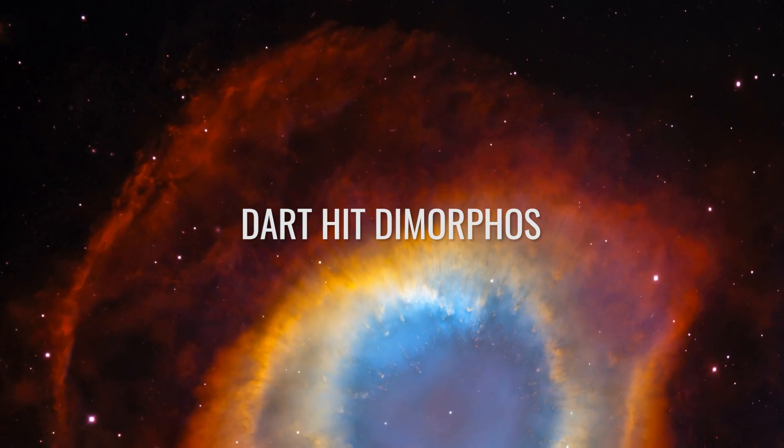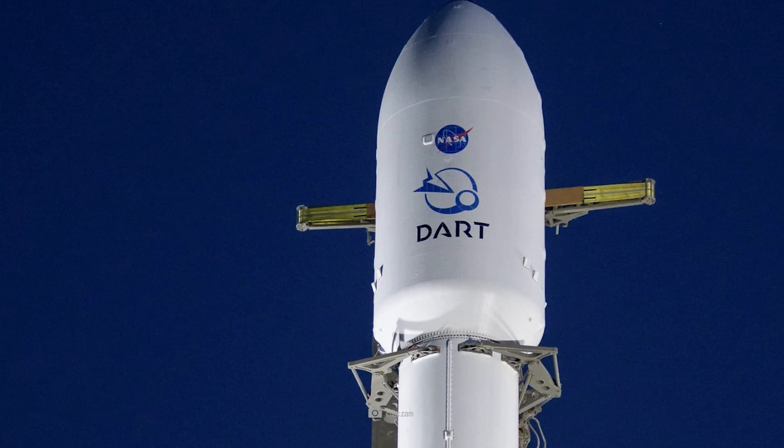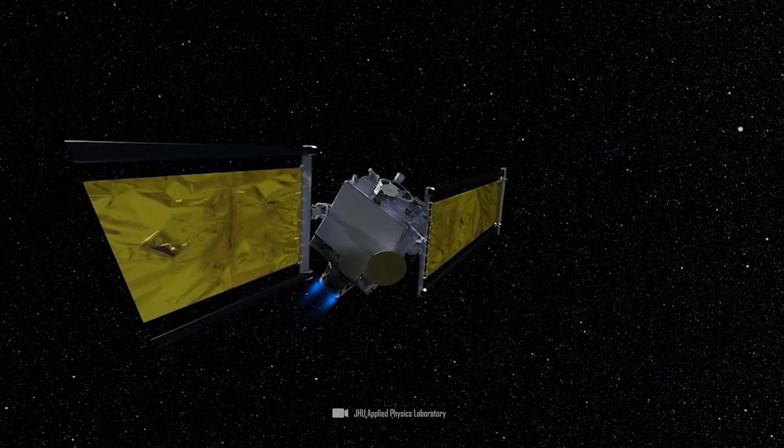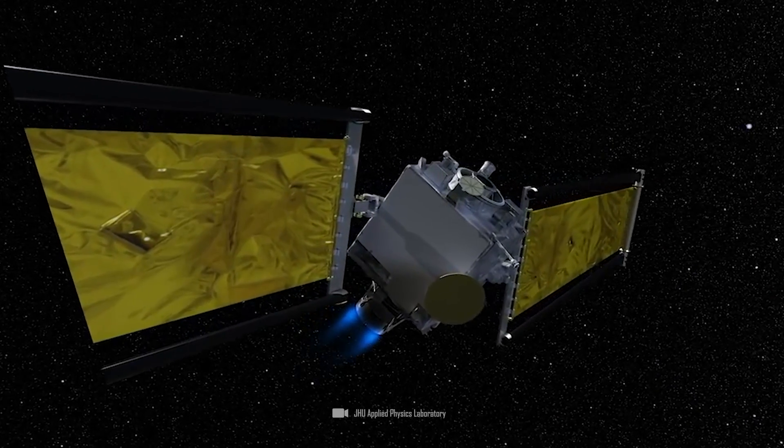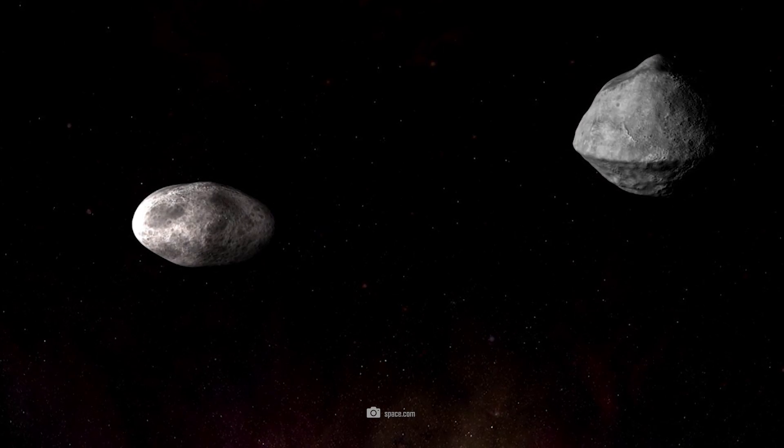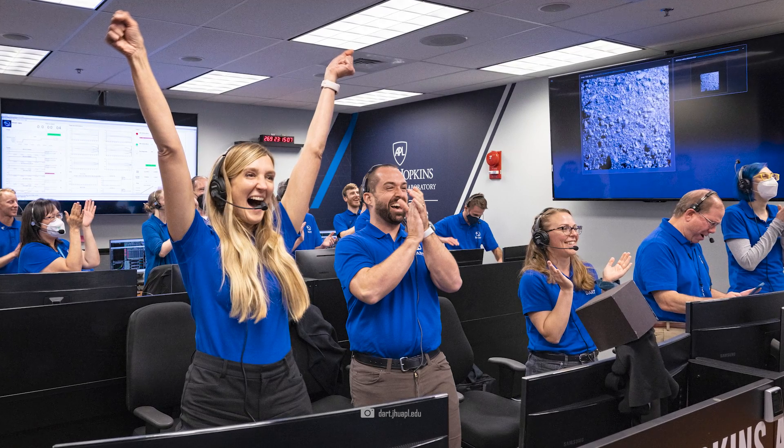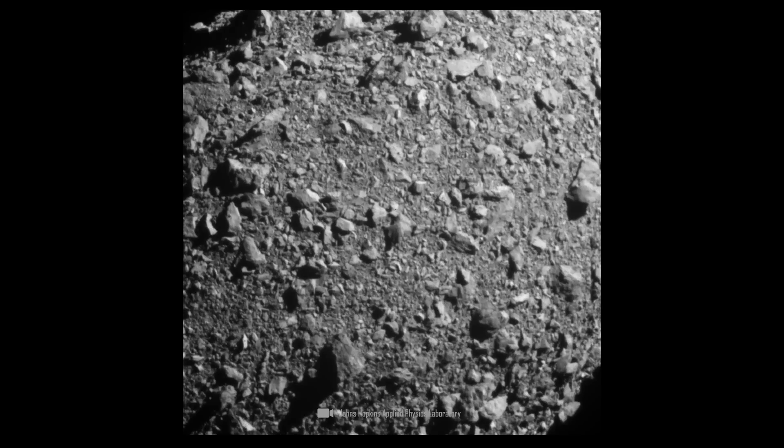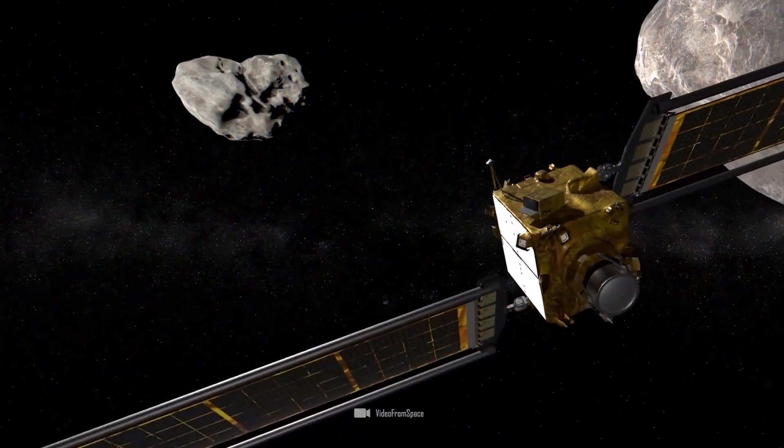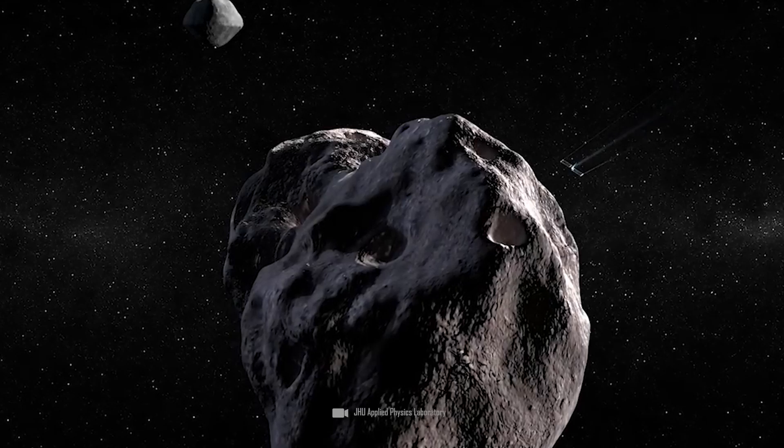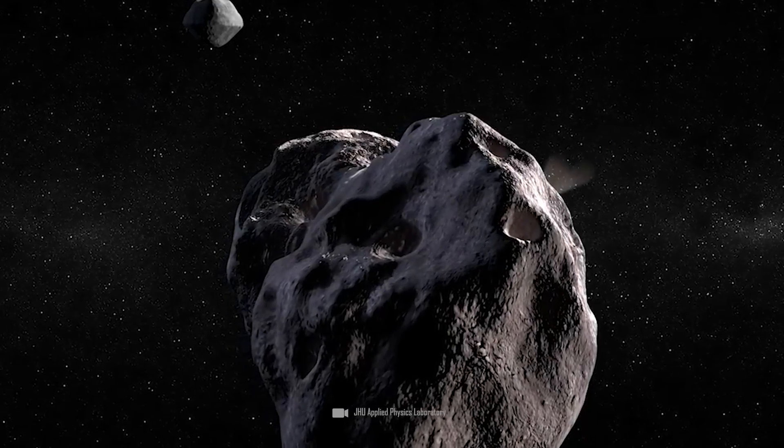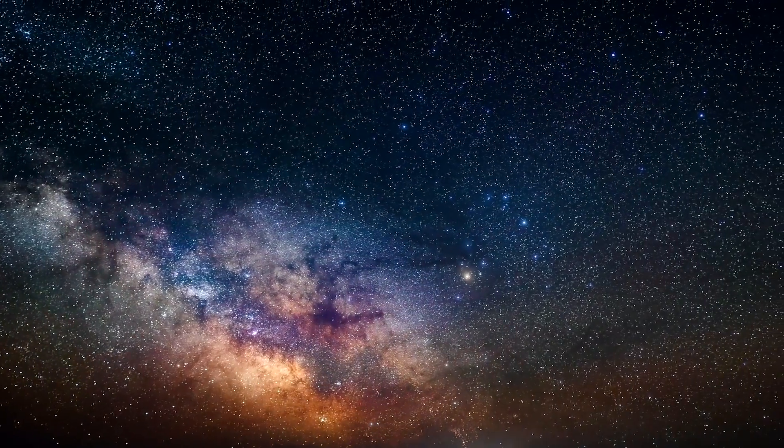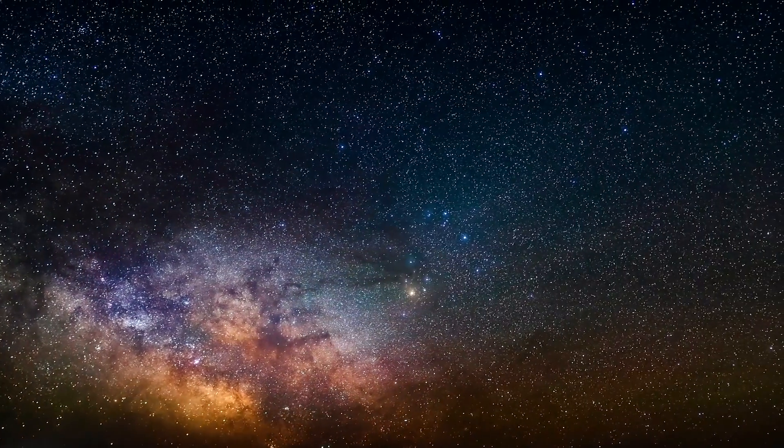DART hit Dimorphos. The DART probe had launched from a spaceport in California in November 2021 with a sure mission of destruction. After nearly 10 months of flight, DART approached the mini-asteroid Dimorphos at a speed of more than 20,000 kilometers per hour. Cheers erupted at NASA's control center as images showed the spacecraft inexorably approaching the asteroid, and suddenly the screen went dark. DART had hit its target. The 570-kilogram probe released forces of several tons of TNT on impact, blasting a 150-meter-wide crater into the asteroid.